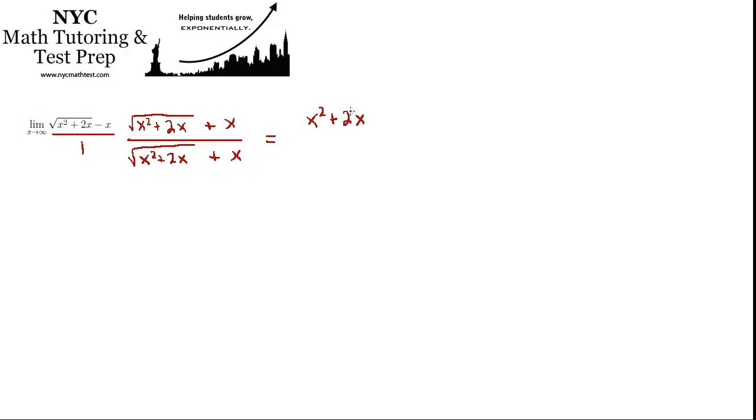Notice there's no square root symbols anymore because we multiplied those together. And then the middle terms cancel out, so we don't have to worry about that. And it's minus x squared for the last term. And the denominator is 1 times this whole quantity. So it's basically just that quantity on the bottom. Square root of x squared plus 2x plus x. And all of this part is under the root.